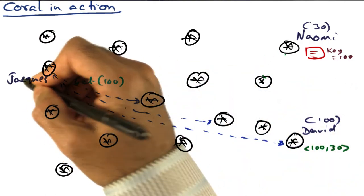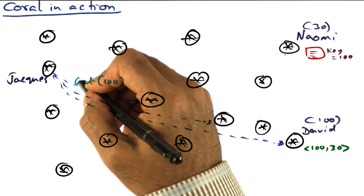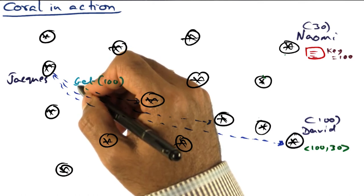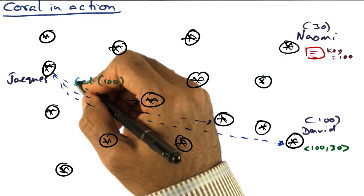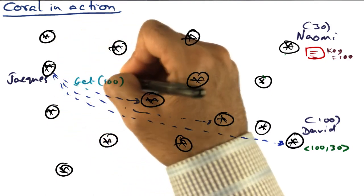Jacques finds out that there is this interesting video whose signature is 100. So he wants to get it, and he knows that the likely place where it is contained is node number 100. But once again, he is going to use the Coral key base routing, and he is doing a get call.